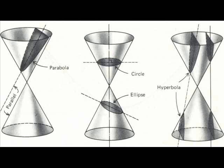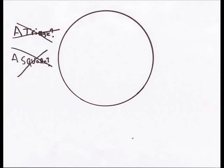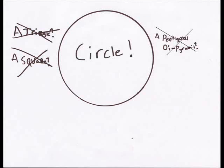Conics come from the ways that we can cut up a cone. What's that? Is that a triangle? No. Is that a square? No. Is that a pentagonal die pyramid? No, it's a circle.